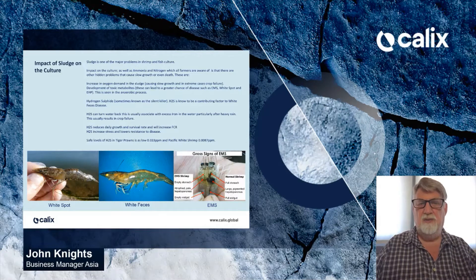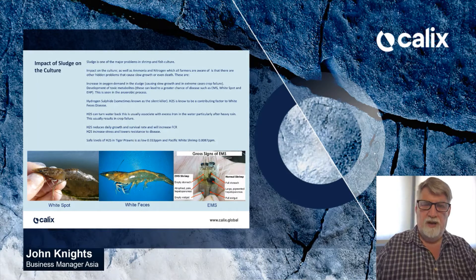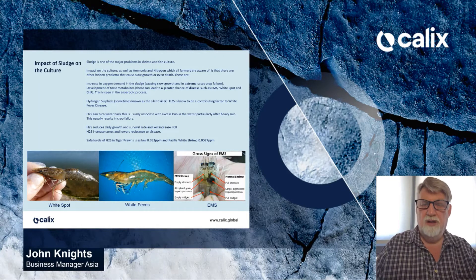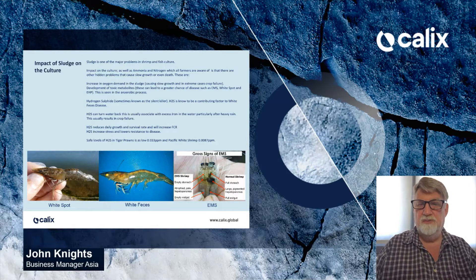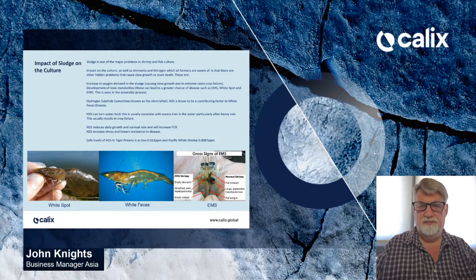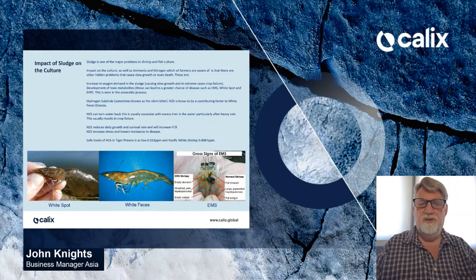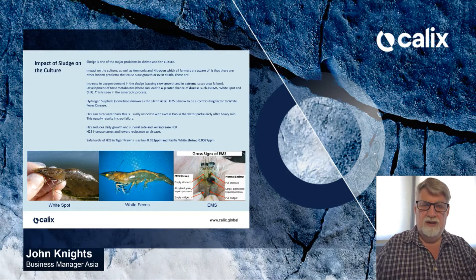These diseases are seen in the anaerobic process in the bottom of the pond. Hydrogen sulfide, also produced in the anaerobic process and sometimes known as a saline killer, is known to contribute to white feces disease, which is a growing problem in today's culture. Hydrogen sulfide can also turn water black, usually associated with excess iron in the water, particularly after heavy rains, and this usually results in crop failure. Hydrogen sulfide reduces daily growth and survival rate and will increase FCR.